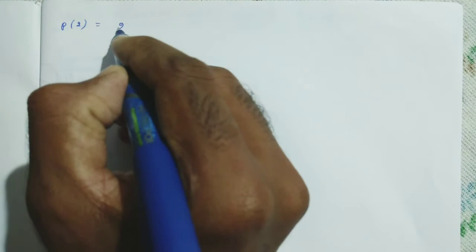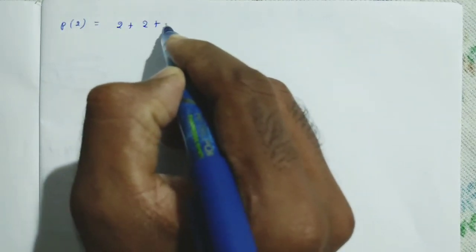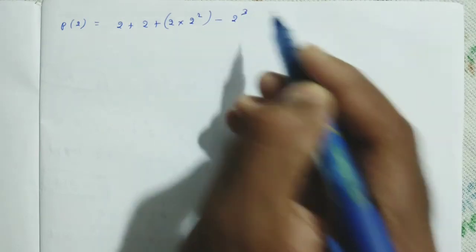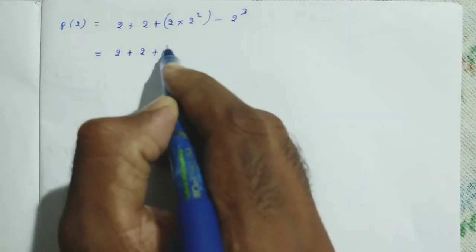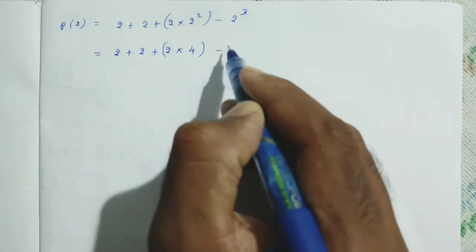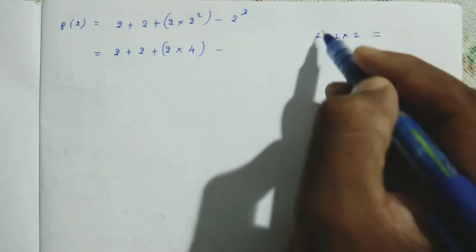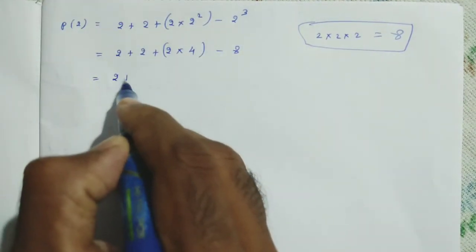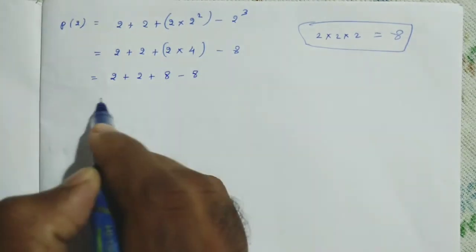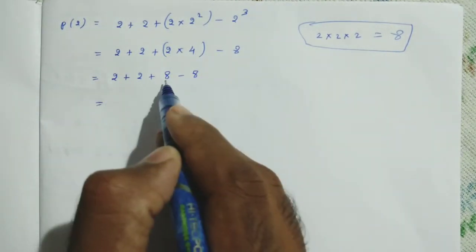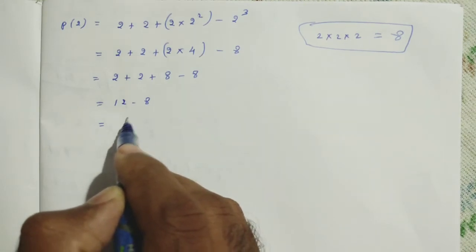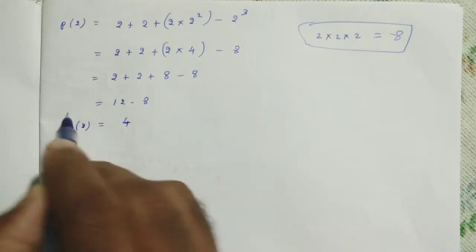Now we can find P of 2. Instead of t, put 2: 2 plus 2 plus 2 into 2 squared minus 2 cubed. 2 squared is 4, 2 into 4 is 8. 2 cubed is 2 into 2 into 2, which is 8. So: 2 plus 2 plus 8 minus 8. Add positive numbers: 2 plus 2 plus 8 equals 12. 12 minus 8 — different signs, subtraction. Remaining is 4, larger number is positive. So P of 2 is equal to 4.